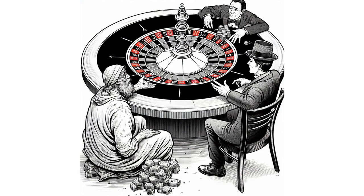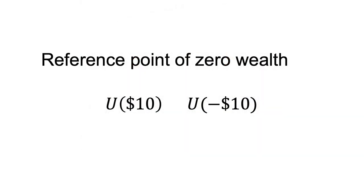The way this is implemented is we typically calculate utility over total wealth. For example, if offered a gamble where they could win or lose $10, we do not calculate the utility of each option as U of $10 and U of minus $10.